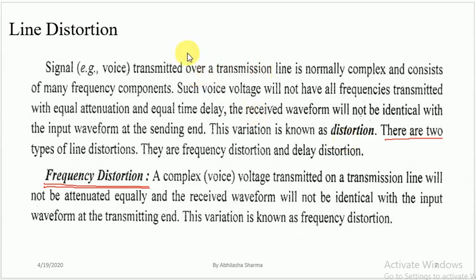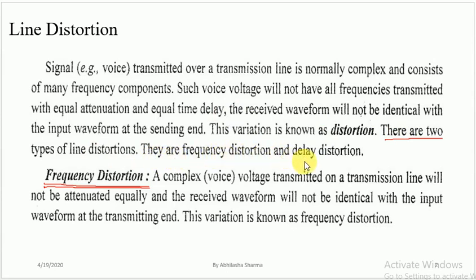Whenever you want to transmit a signal, it consists of many types of frequency components. Those frequency components do not reach at the same time at the receiving end. Due to this, a variation occurs — variation occurs just because of the delay. This variation is known as distortion. There are two types of line distortion: one is called frequency distortion and another one is called delay distortion.